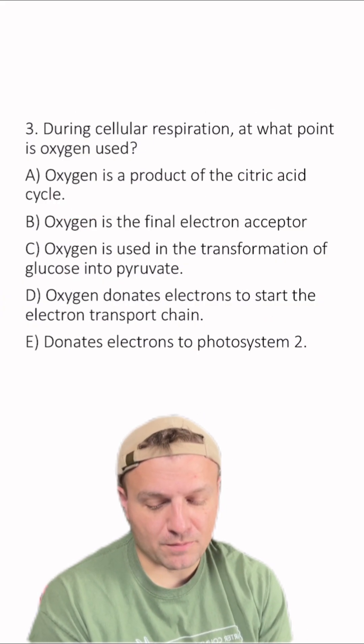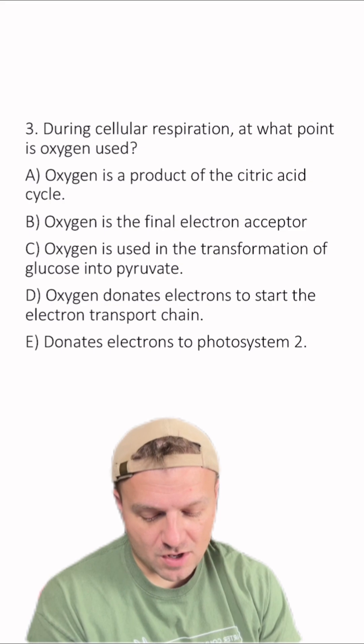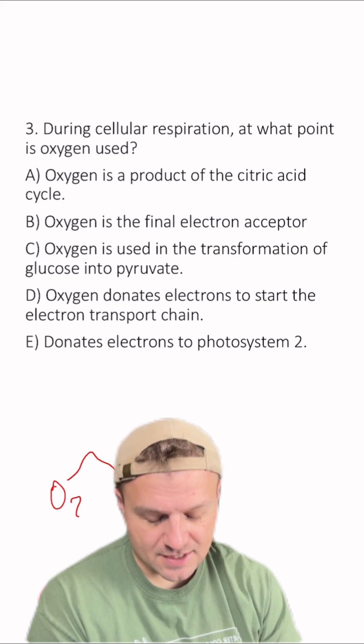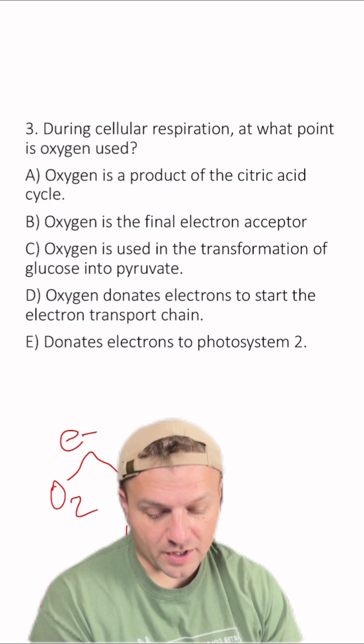And number three, during cellular respiration, at what point is oxygen used? Remember that oxygen is going to be used as a final electron acceptor. It's going to bond with electrons and hydrogen ions to form water.